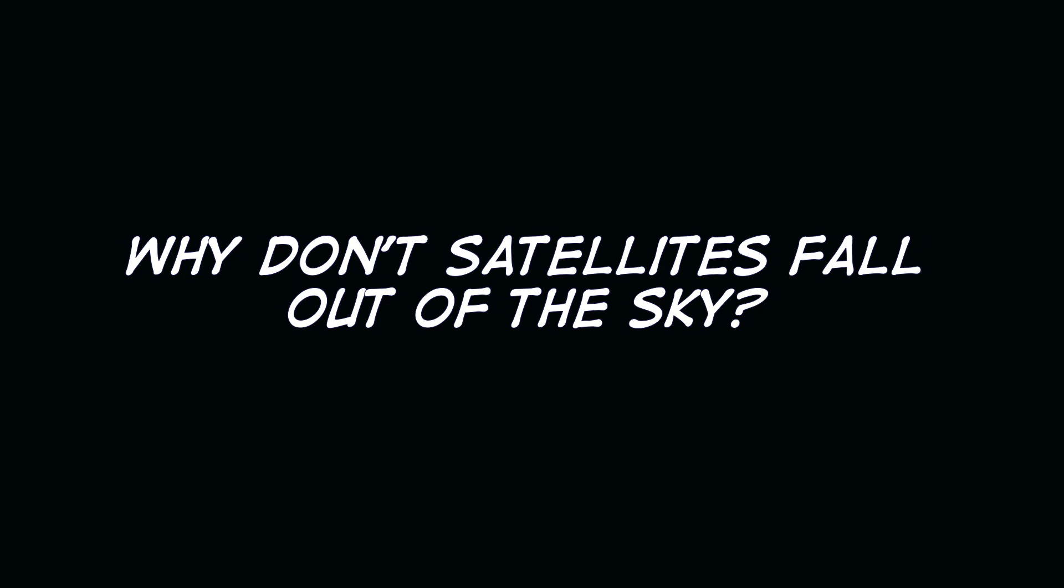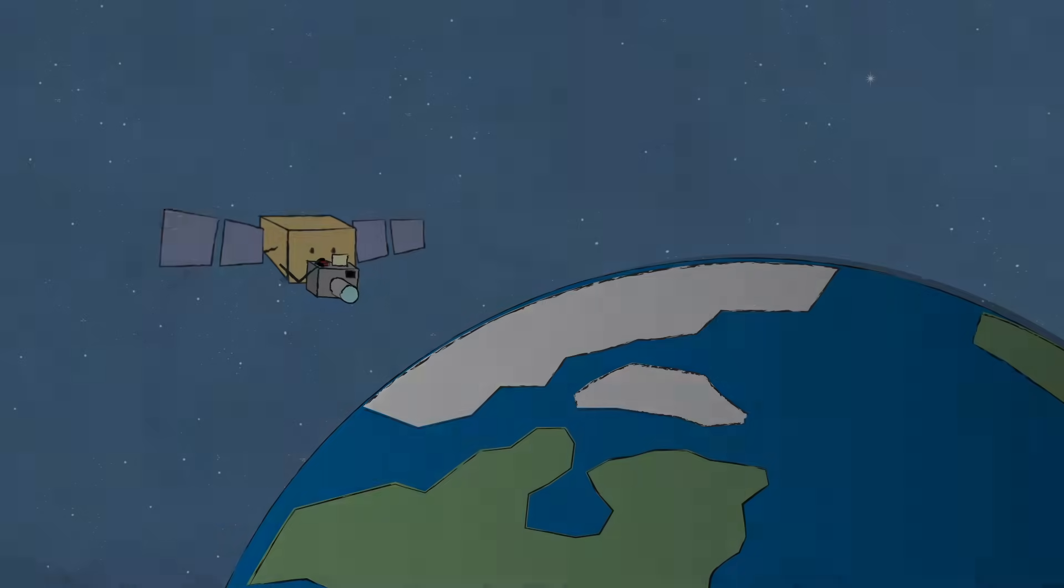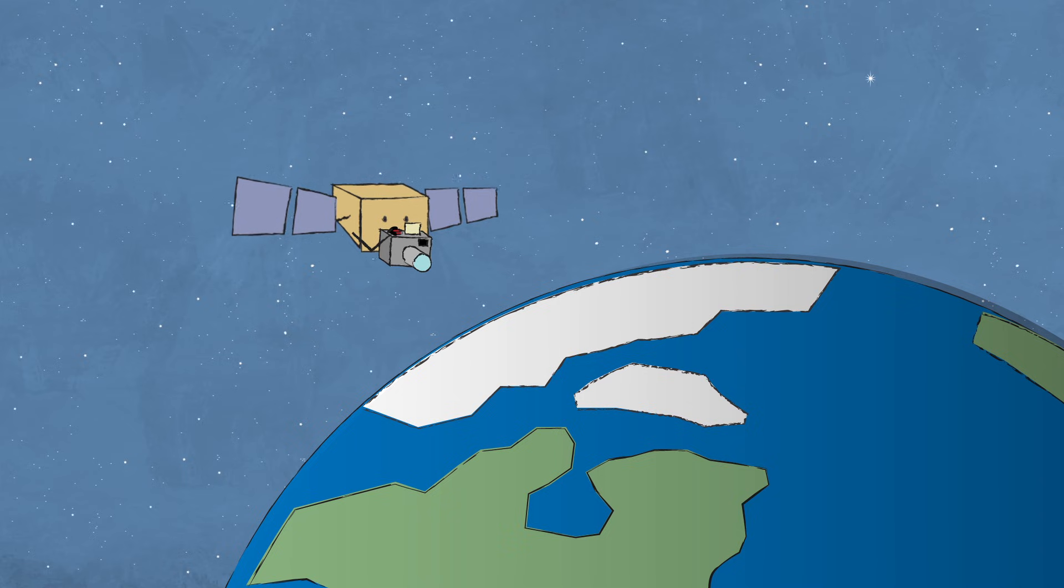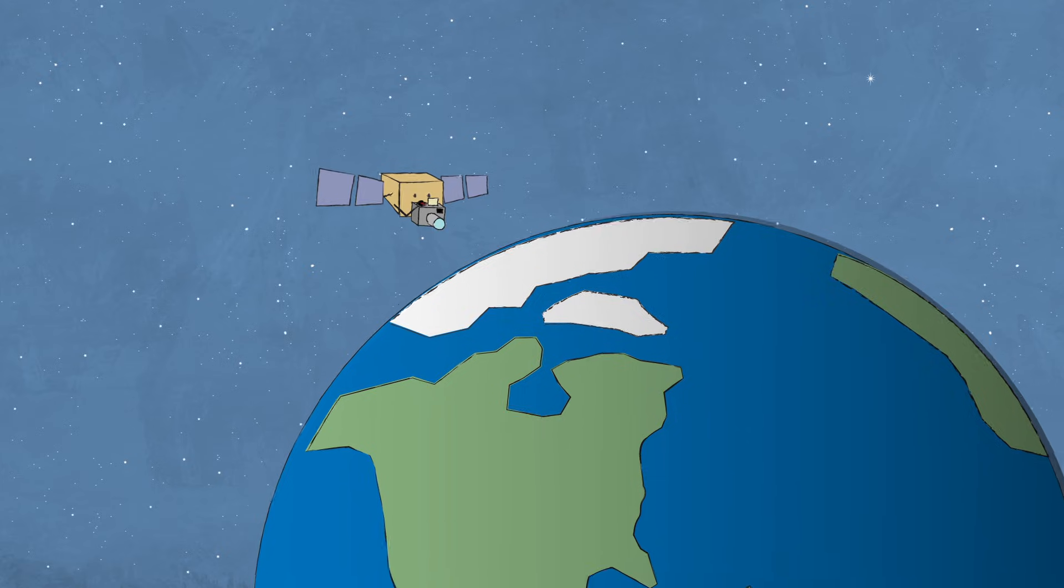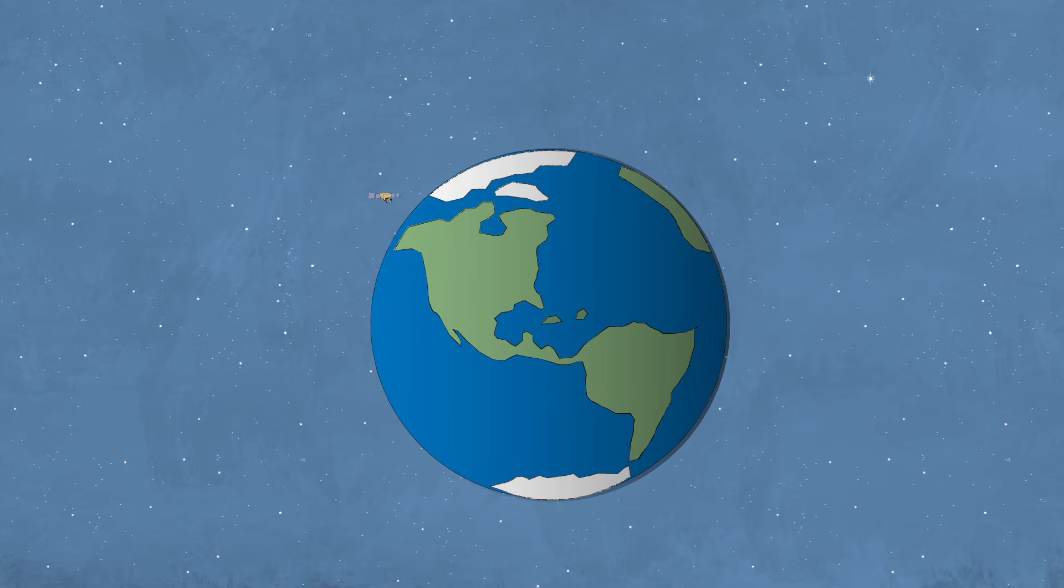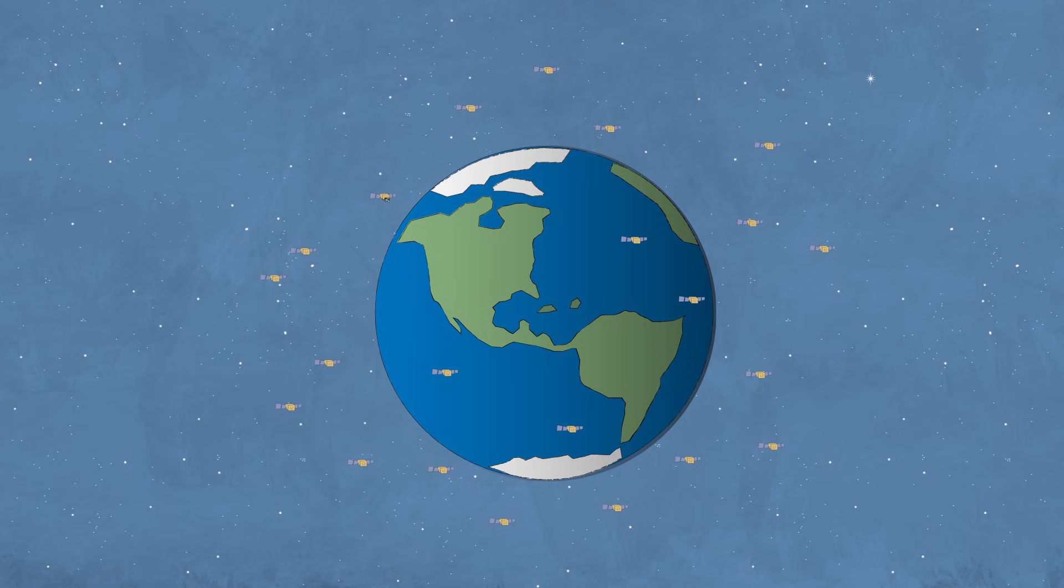Why don't satellites fall out of the sky? A satellite is a type of machine that orbits Earth, taking pictures and collecting information. There are thousands of satellites orbiting Earth right now. How do they all stay up there? And why don't they just fall out of the sky?